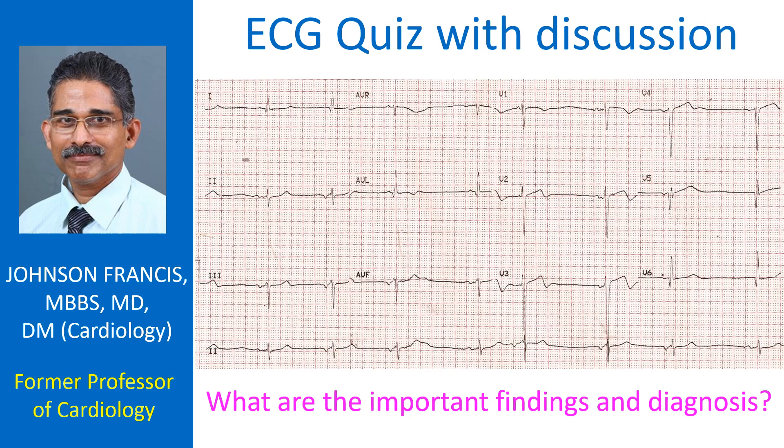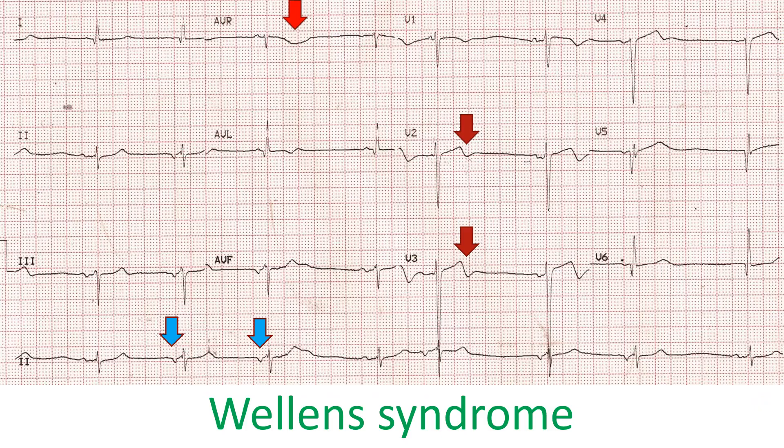What are the important findings and diagnosis? The first beat in the rhythm strip is a sinus beat, and so is the fourth beat as well as the last beat, with upright P waves and a normal PR interval.